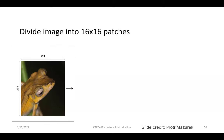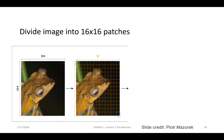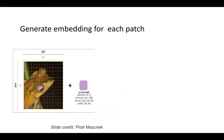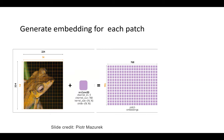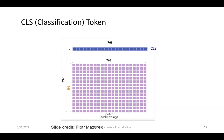If you take an image of 224 by 224 and divide into 16x16 patches, you get 14 by 14 patches, which is 196 patches total. Each patch is RGB, so 16x16 is 256, multiplied by 3 gives 768 — the dimension of that token feature vector. So we have 196 tokens, each of 768 dimensions. We then add a special CLS token, giving us 197 tokens total.